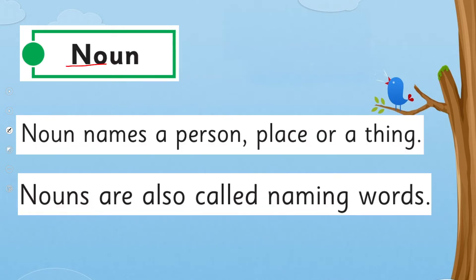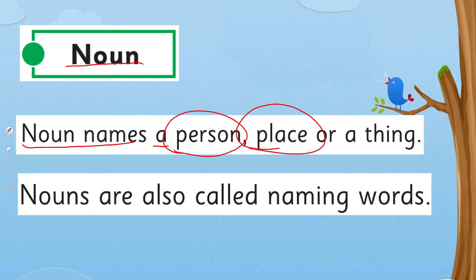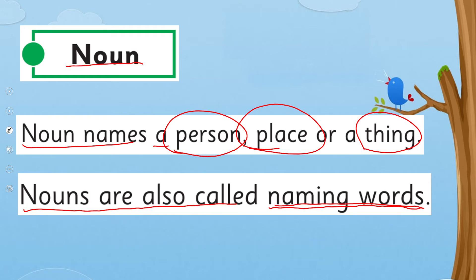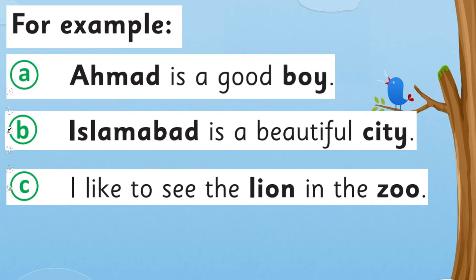Noun names a person, place, or a thing. So nouns are also called naming words. In your previous class you were saying 'naming word,' but now we will say 'noun' — it's the grammatical term we use for naming words. This is pretty simple; are you clear about it?